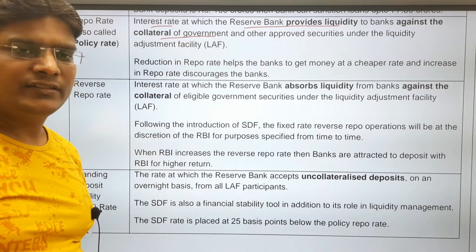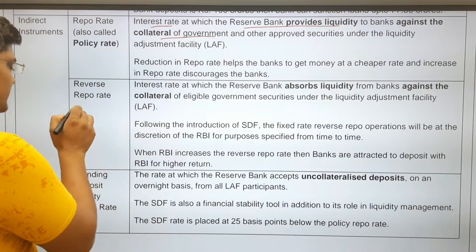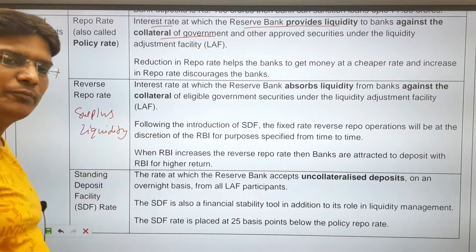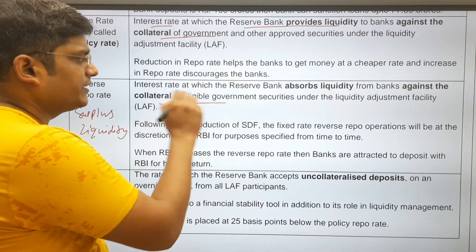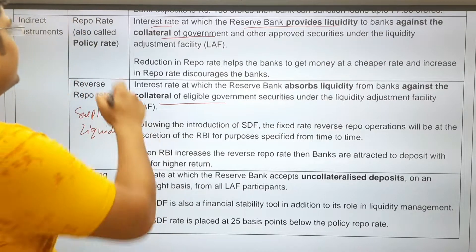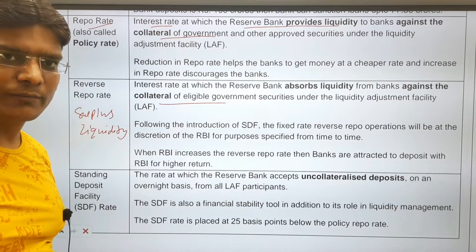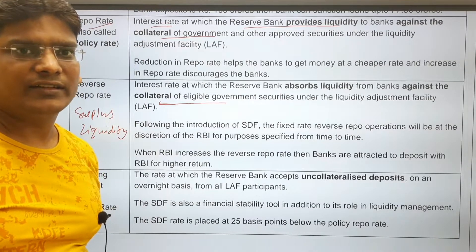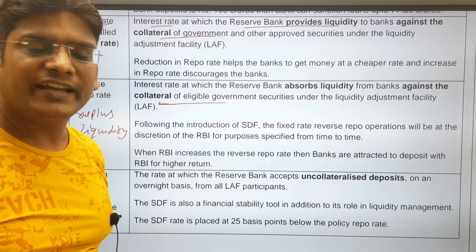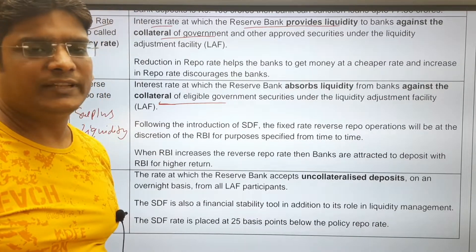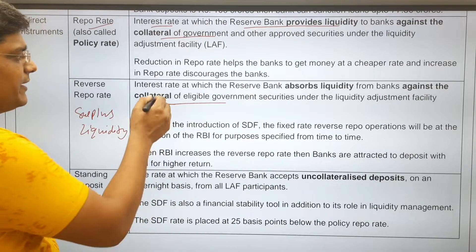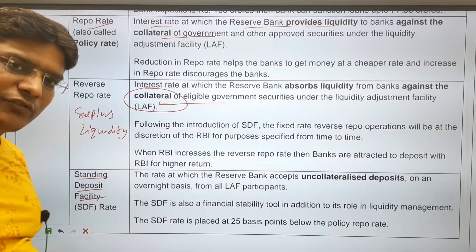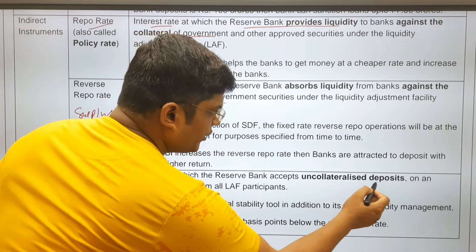Banks can take loans from RBI against collateral of government securities. If banks have surplus liquidity, they can deposit with RBI and RBI provides collateral — this is the reverse repo rate. However, due to COVID-19, there is surplus liquidity in the banking system because RBI created liquidity to save the economy from recession. Since RBI does not have sufficient collateral, RBI introduced the Standing Deposit Facility (SDF).